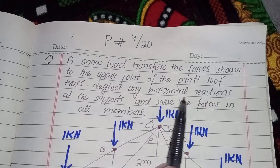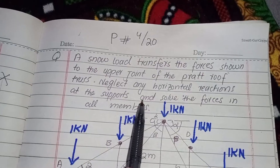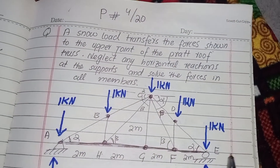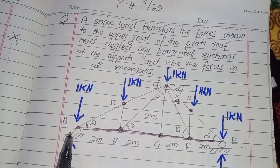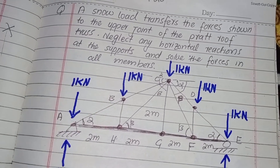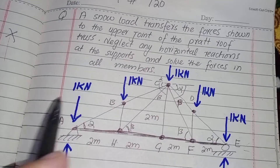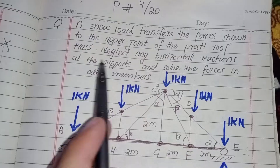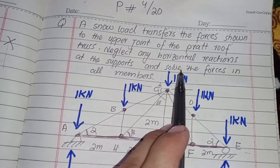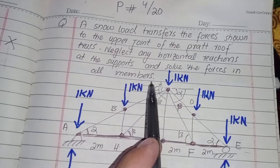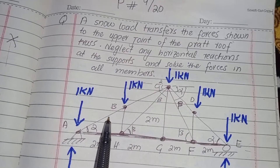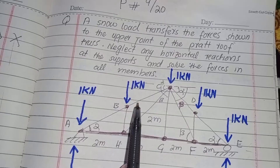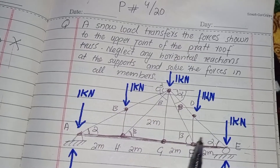We neglect any horizontal reaction at the support. This support and this support — we neglect the horizontal reaction, which makes the resist support, so we neglect these forces. We neglect horizontal reaction at support and solve the forces in all members. We have to solve the force in this member, and the force in all these members.